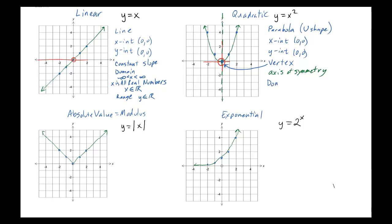For the domain of the quadratic, the graph keeps going to the right and to the left forever, so the domain is x is all real numbers. The range is a little different this time. The graph goes down to 0 but never below 0, so 0 is the lowest the graph can go. It keeps going up forever, so y is between 0 and infinity. The 0 can be included because that point actually exists, so y is greater than or equal to 0.